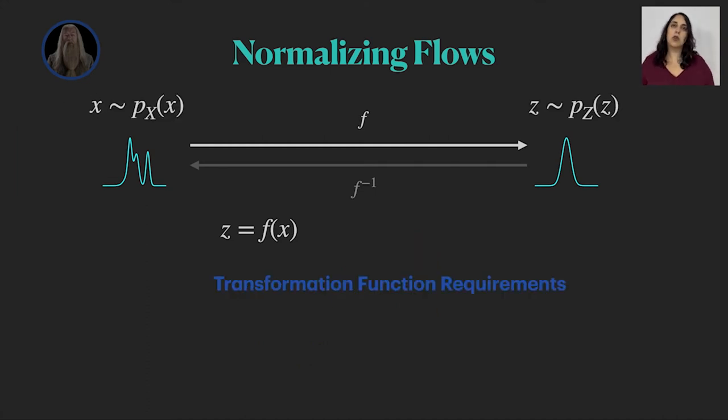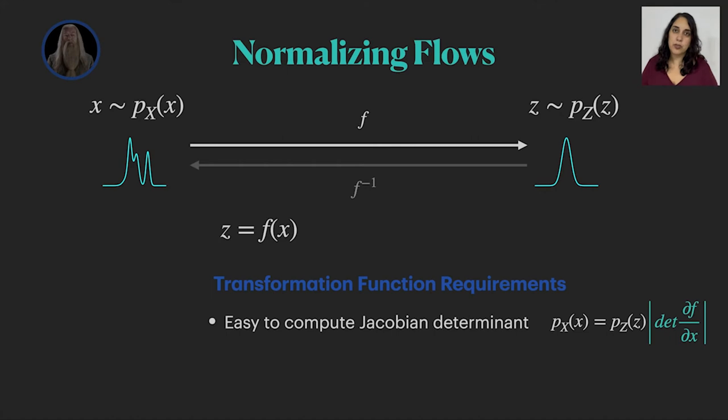So what are the requirements from this transform function for it to be useful in the generative model? Well, first of all, we want the determinant of the Jacobian to be easy to compute because this is what we optimize during training. And if it is slow to compute, our training will be slow as well.